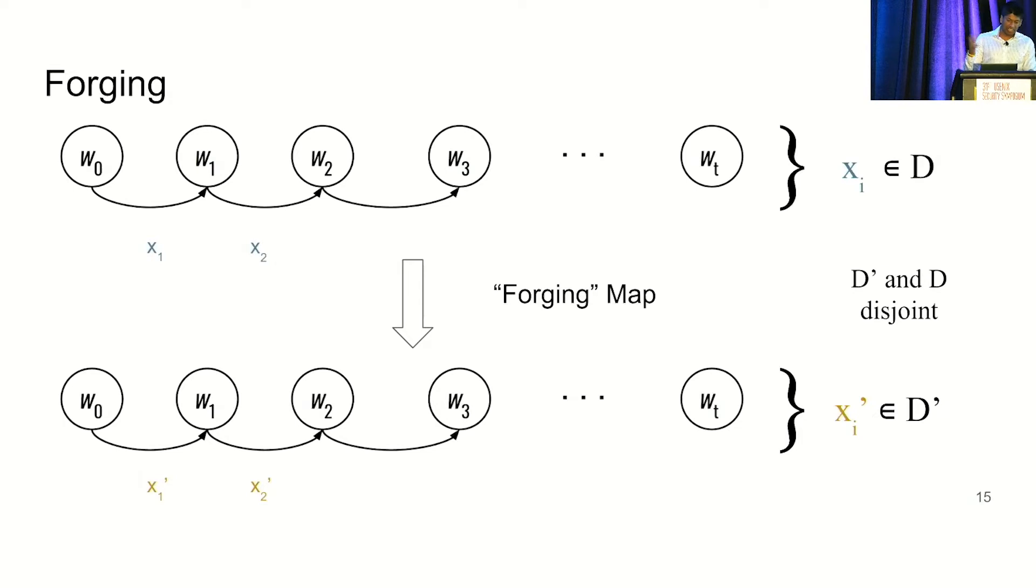So imagine I trained on a data set, and I obtained a valid POL. But before I submit it to a verifier, I apply a forging map, which really keeps all the checkpoints the same, but changes the data points to be those in a different data set. Now let's just assume that this data set is disjoint to the original data set. So if I was to submit this POL for any of the original points I trained on, the verifier would conclude I did not train on that data point. So clearly, this is spoofing unlearning.